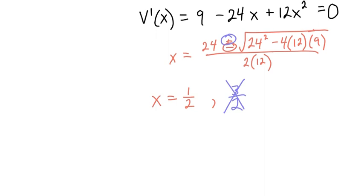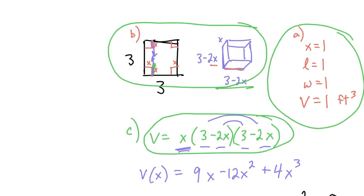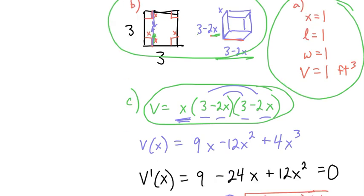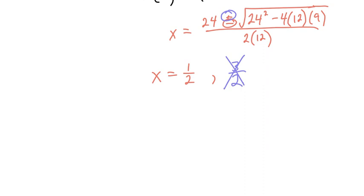So had I cut 1 half on each side, so 3 minus 2 times 1 half, or 3 minus 1 would give me 2. So the dimensions would have to be 2 foot by 2 foot by 1 half foot.